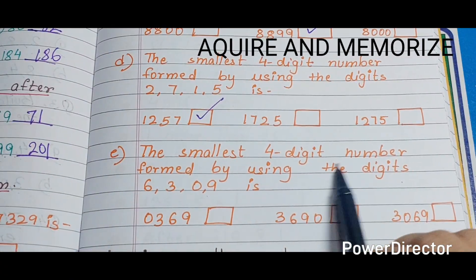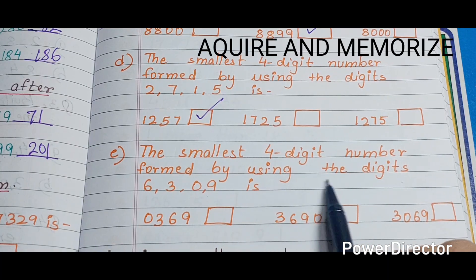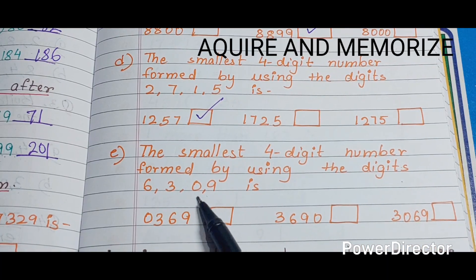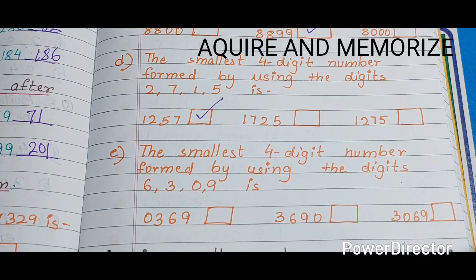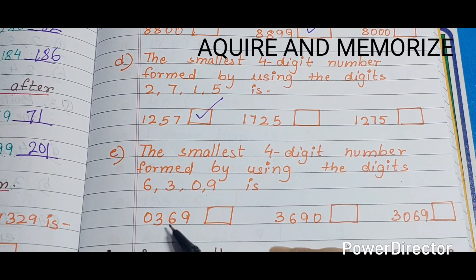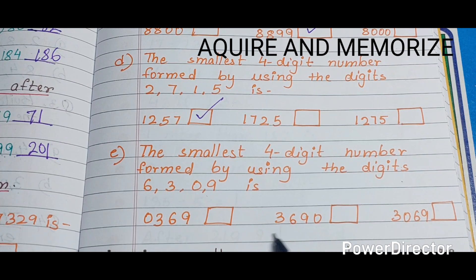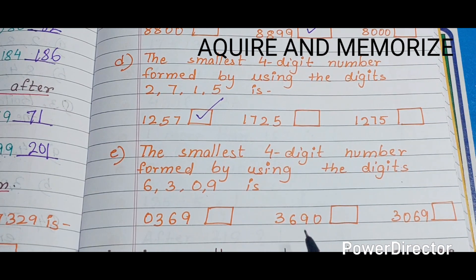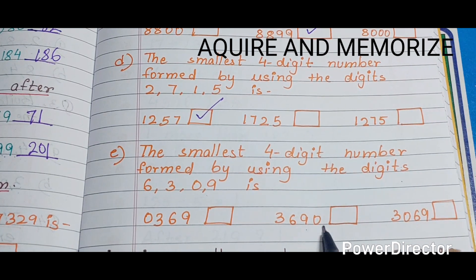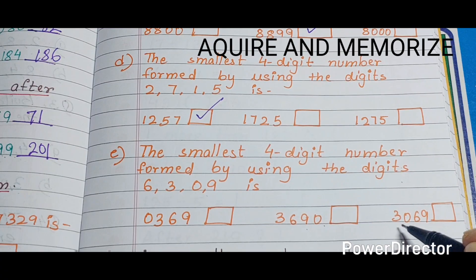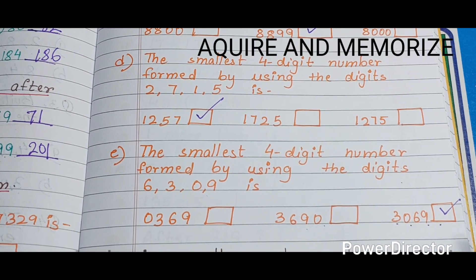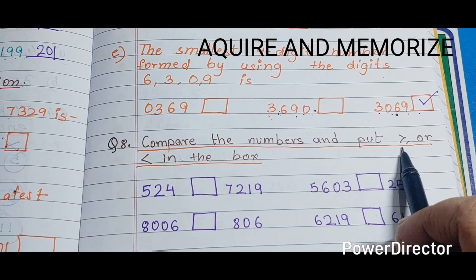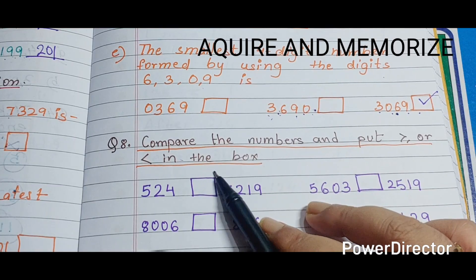The smallest four-digit number formed using the digits 6, 3, 0, 9. We cannot start with 0, so the smallest arrangement is 3069. Now, compare the numbers and put greater than or less than in the box.